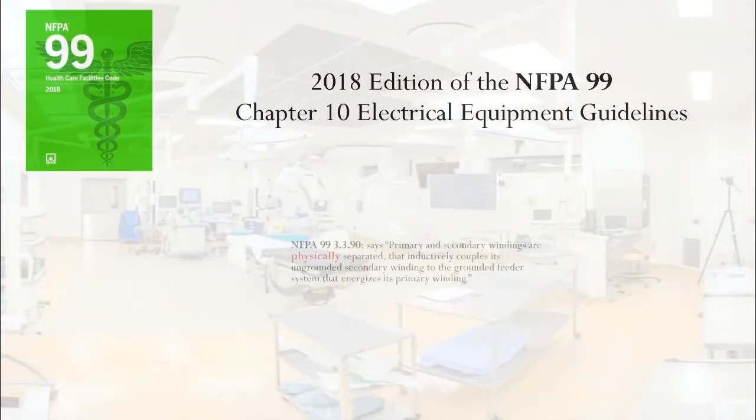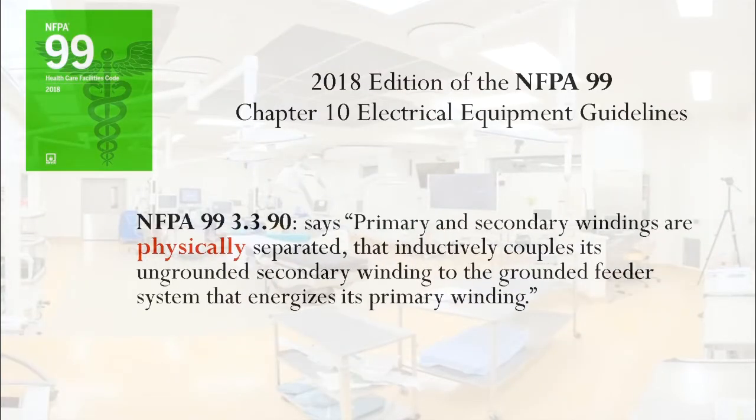NFPA 99 3.3.90 says primary and secondary windings are physically separated, that inductively couples its ungrounded secondary winding to the grounded feeder system that energizes its primary windings. Simply put, located in the isolation transformer are the primary and secondary windings. The primary windings are not referenced to secondary windings — they don't touch each other.